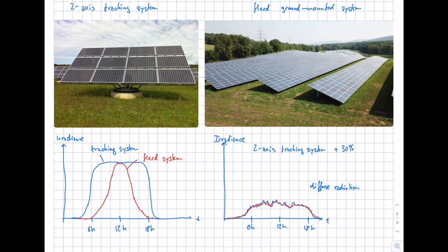On the other hand, the installation, investment, and operation and maintenance costs for tracking systems are significantly higher because of the many moving technical parts that require regular maintenance. The operation and maintenance costs for two-axis tracking systems are an additional 20 to 30 percent compared to ground-mounted systems. From an economic point of view, there is no clear advantage, which is why fixed ground-mounted systems are predominantly used globally — they are cheap, easy to install, have low maintenance costs, and produce a sufficient amount of energy.